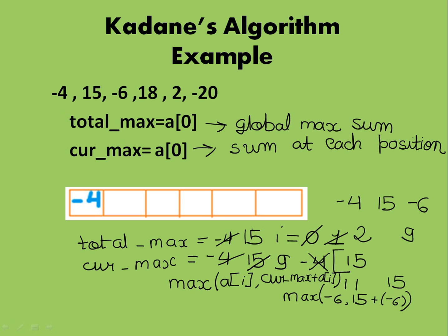So now current_max is 9 but I will not change total_max, it is still 15.